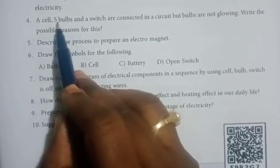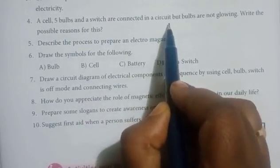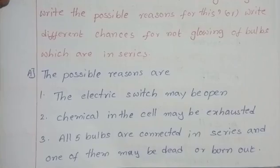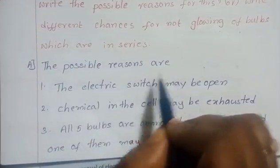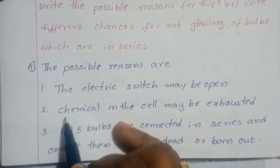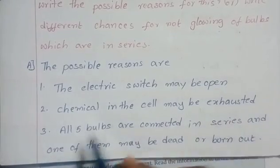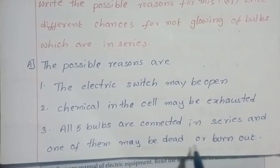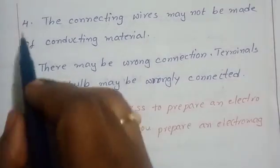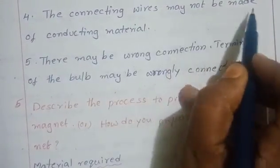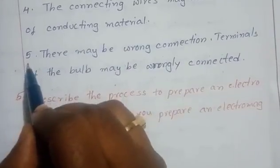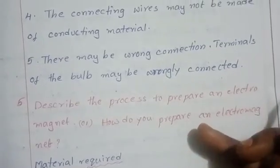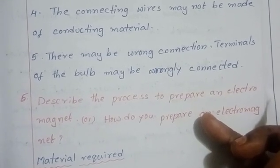Fourth question: A cell, five bulbs, and a switch are connected in a circuit, but the bulbs are not glowing. Possible reasons: the switch may be open; the chemical in the cell may be exhausted; all five bulbs are in series and one may be dead or burnt out; the connecting wires may not be made of conducting material; or there may be a wrong connection.